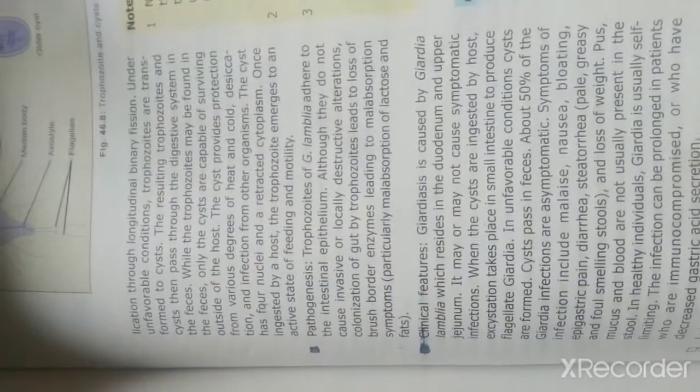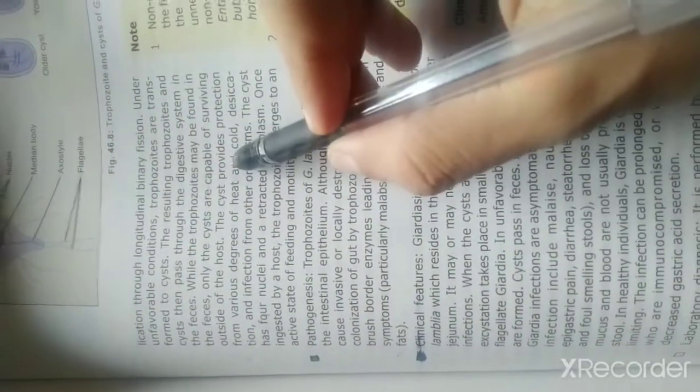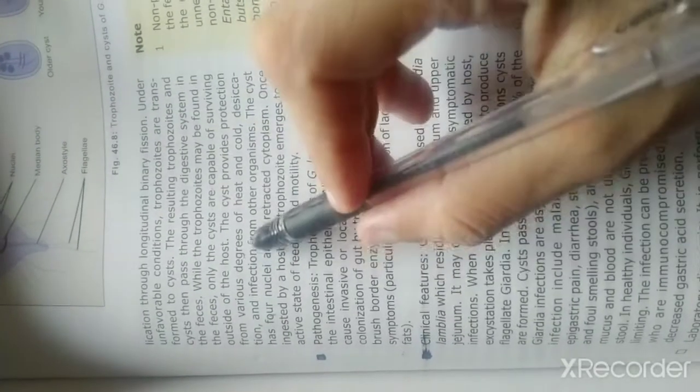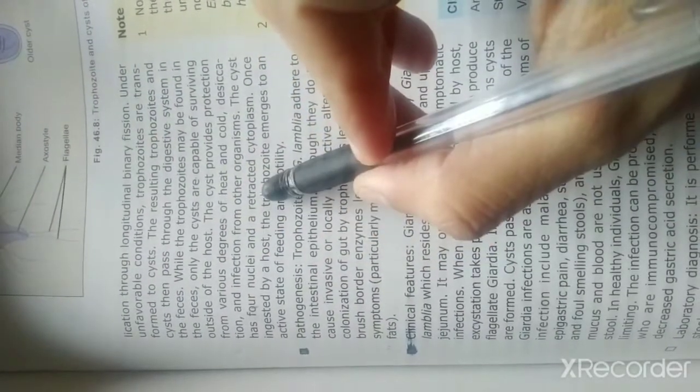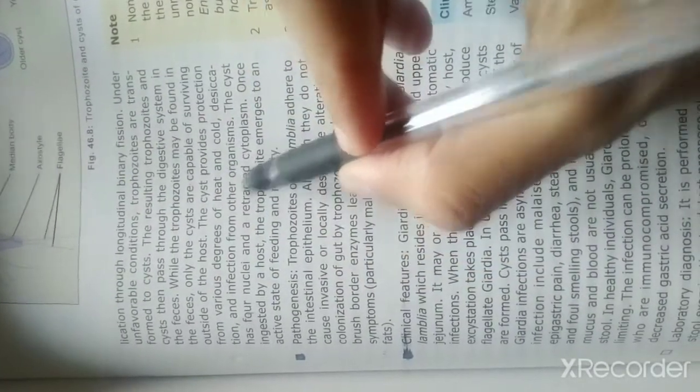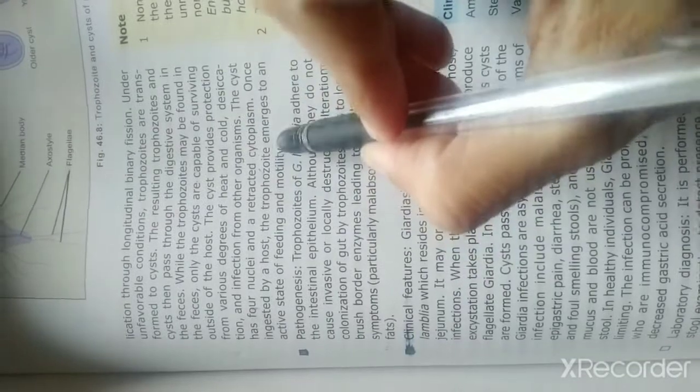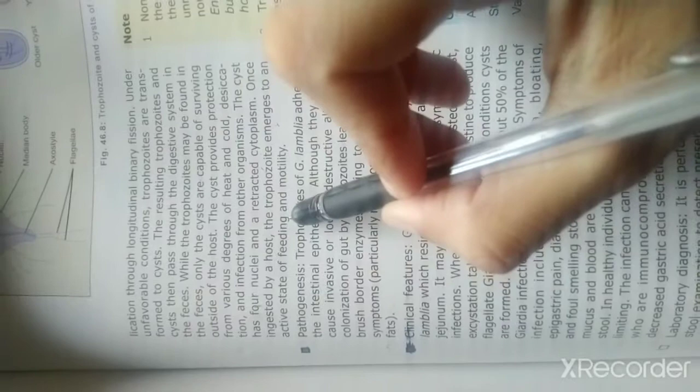The cysts provide protection from various degrees of heat and cold, and desiccation and infection from other organisms. The cyst has four nuclei and retracted cytoplasm. Once ingested by the host, the trophozoites emerge to an active state of feeding and motility.